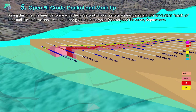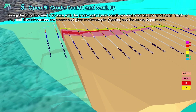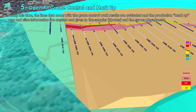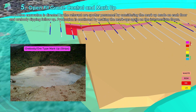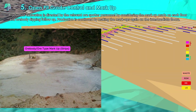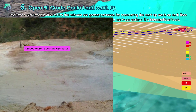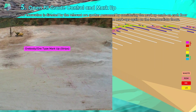The lines that come with the grade control work results are evaluated in the production markup map, and slice information is created and given to the spotter in the survey.